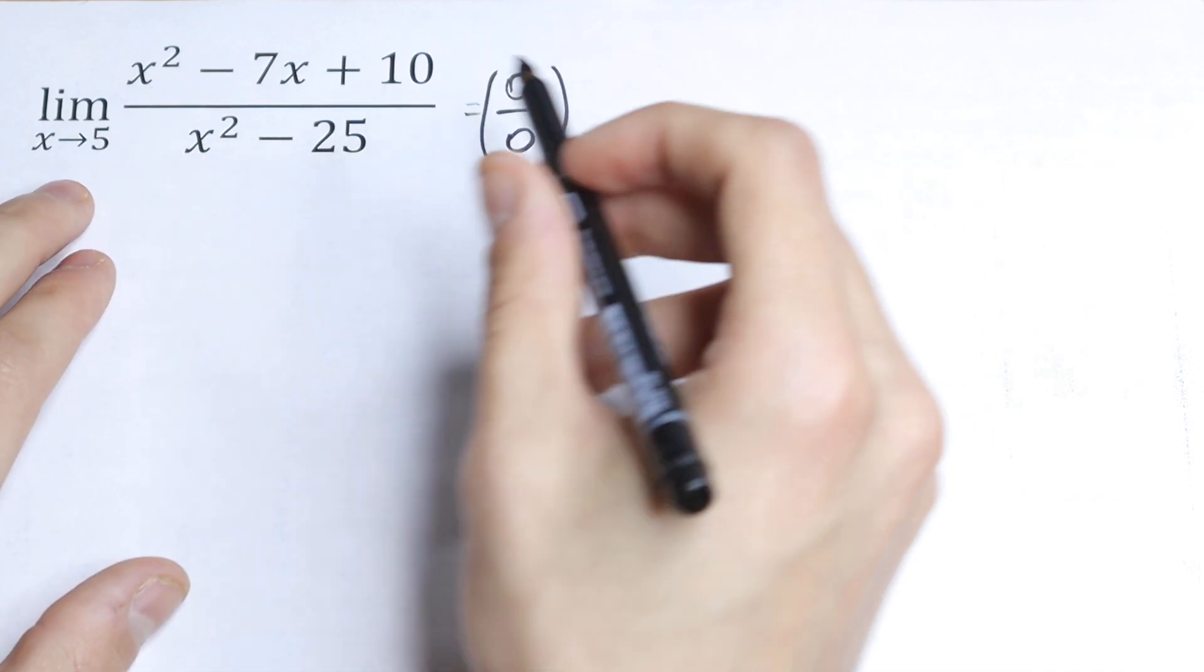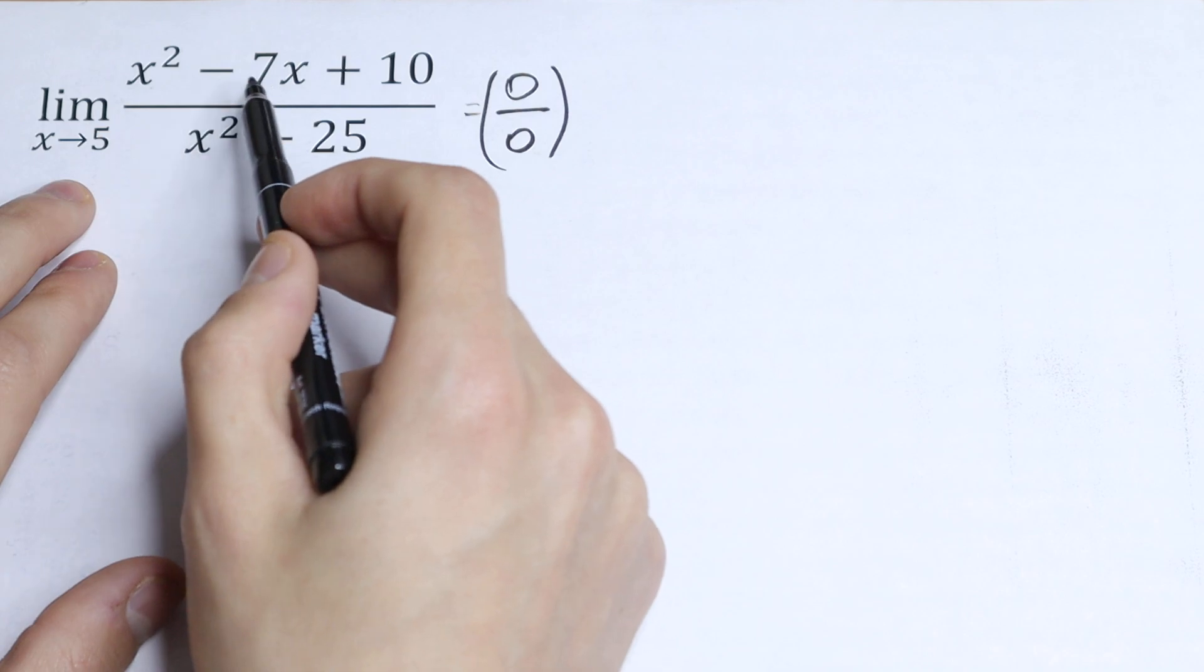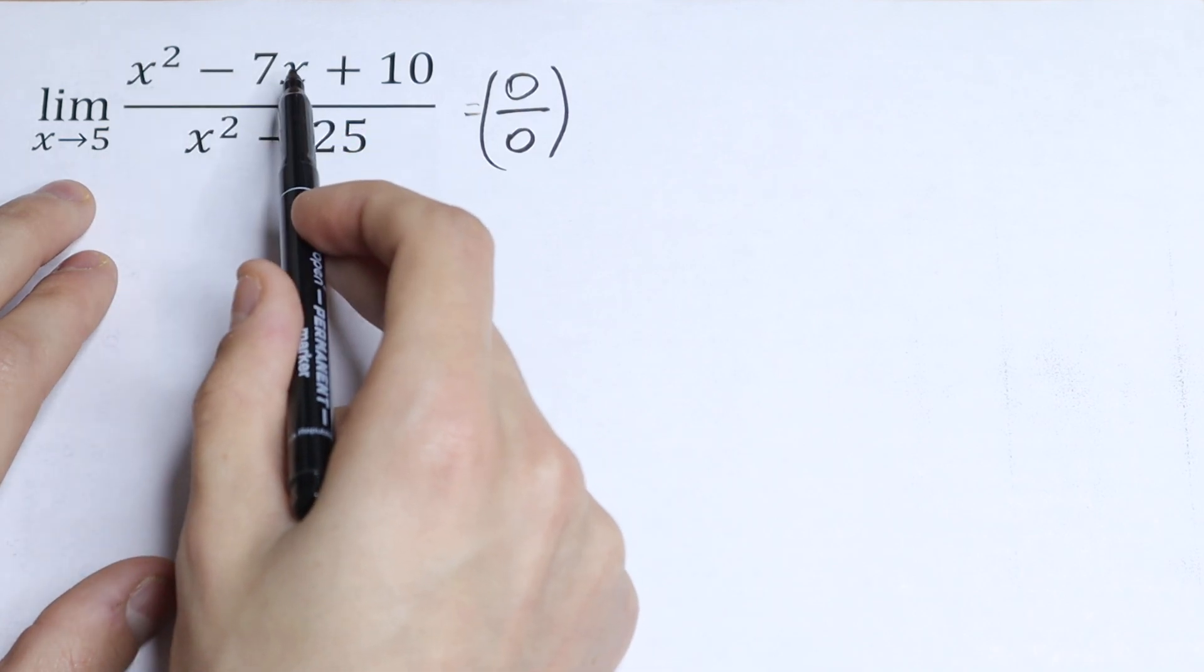So what are we going to do? x minus 5 gives us an undefined answer, so we need to factor out this x minus 5 from the numerator and denominator.